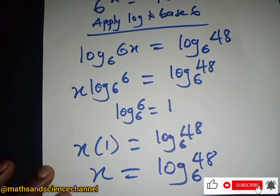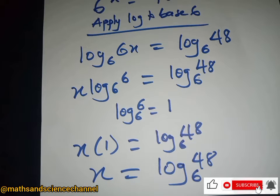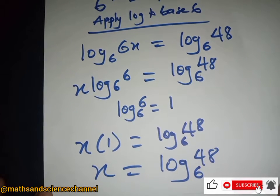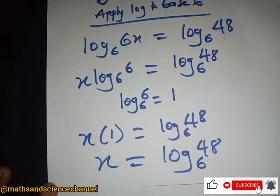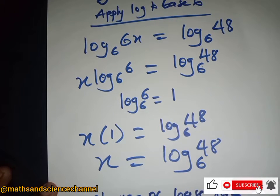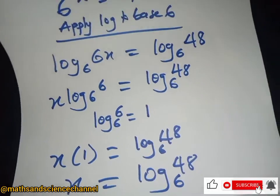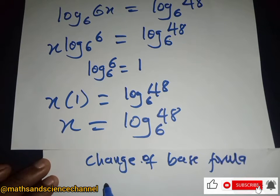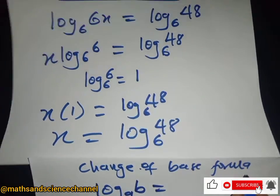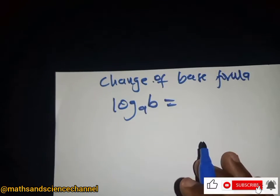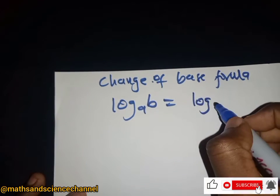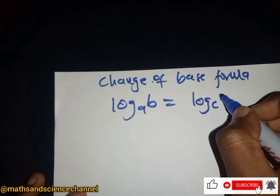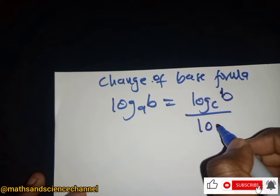Now what we are going to do next is to change the base in order to find x itself. We are going to use the change of base formula. The change of base formula states that log base A of B equals log base C of B divided by log base C of A.